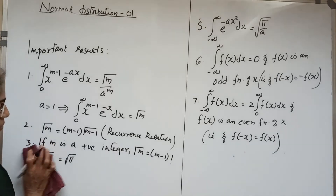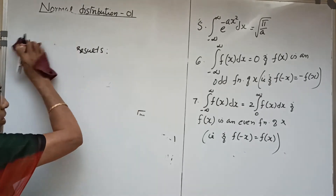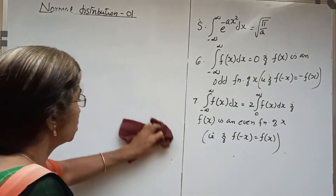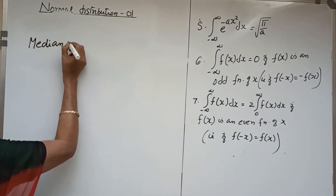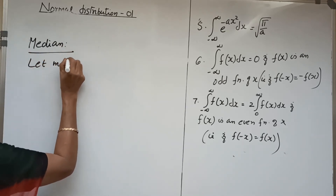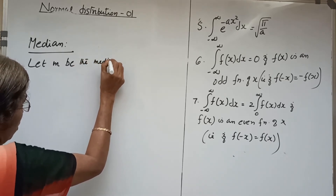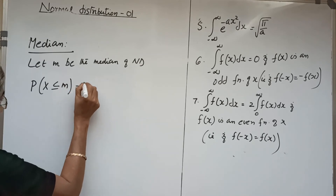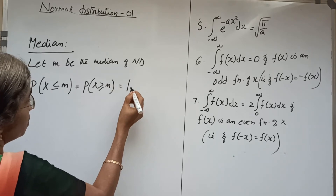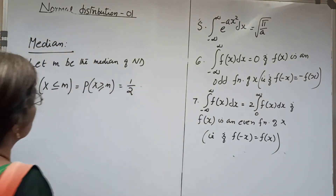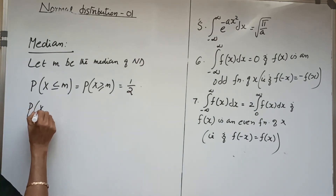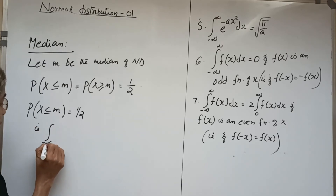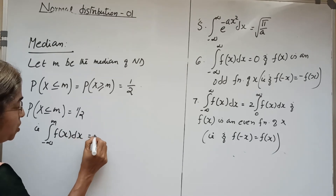We now move on to the median. The median of any distribution is that point which divides the total area into two equal parts. Let m be the median of normal distribution, so that we have the result: probability x less than or equal to m equals probability x greater than or equal to m equals 1 by 2. Considering probability x less than or equal to m equals 1 by 2, that is, integral from minus infinity to m of f of x dx equals 1 by 2.